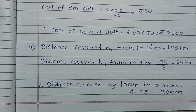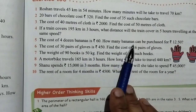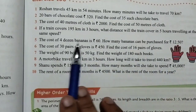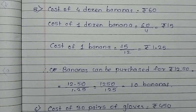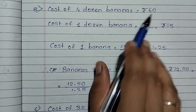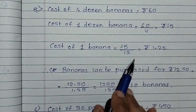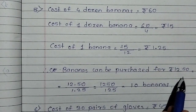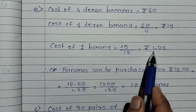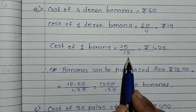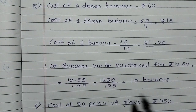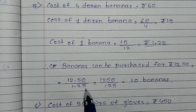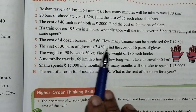Question number 5: The cost of 4 dozen bananas is Rs.60. How many bananas can be purchased for Rs.12.50? First, we find the cost of 1 dozen: 60 divided by 4 equals Rs.15. Then cost of 1 banana: 15 divided by 12 equals Rs.1.25. To find how many bananas can be bought for Rs.12.50, divide 12.50 by 1.25, giving 10 bananas.